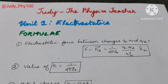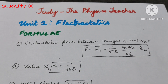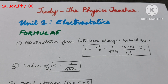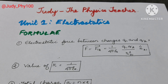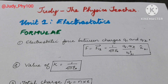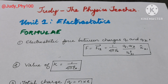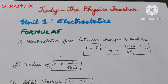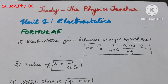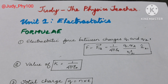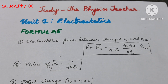Welcome students. In Unit 1 Electrostatics, we will cover all the formulas. The electrostatic force between charges q1 and q2: F is equal to F12, which is equal to 1 by 4 pi epsilon naught, q1 q2 divided by r squared. The value of k is equal to 1 by 4 pi epsilon naught.